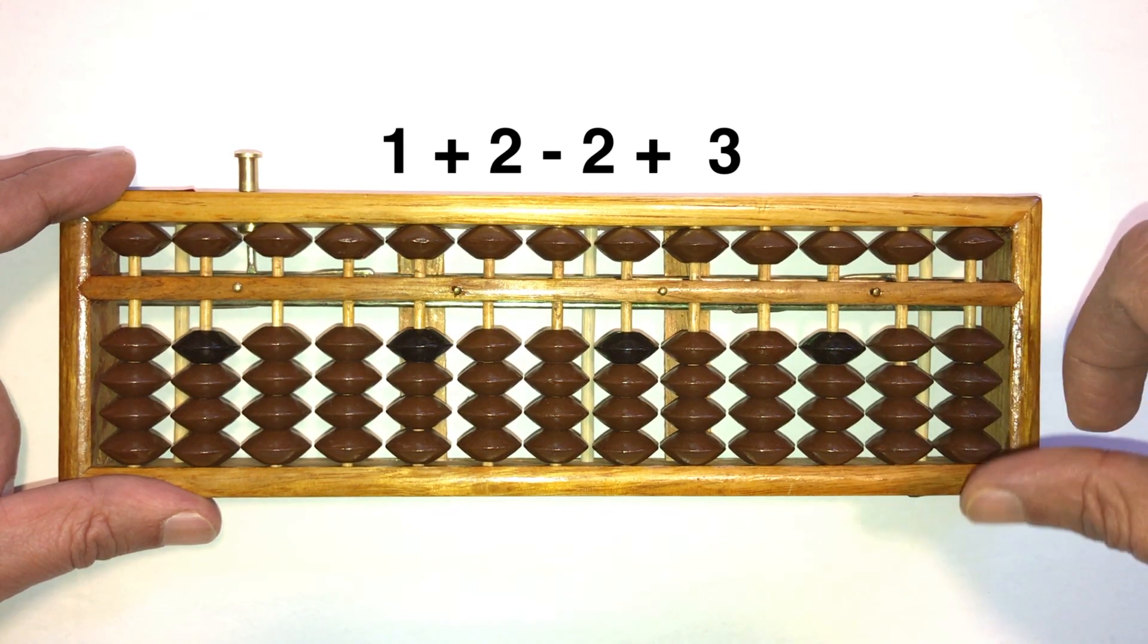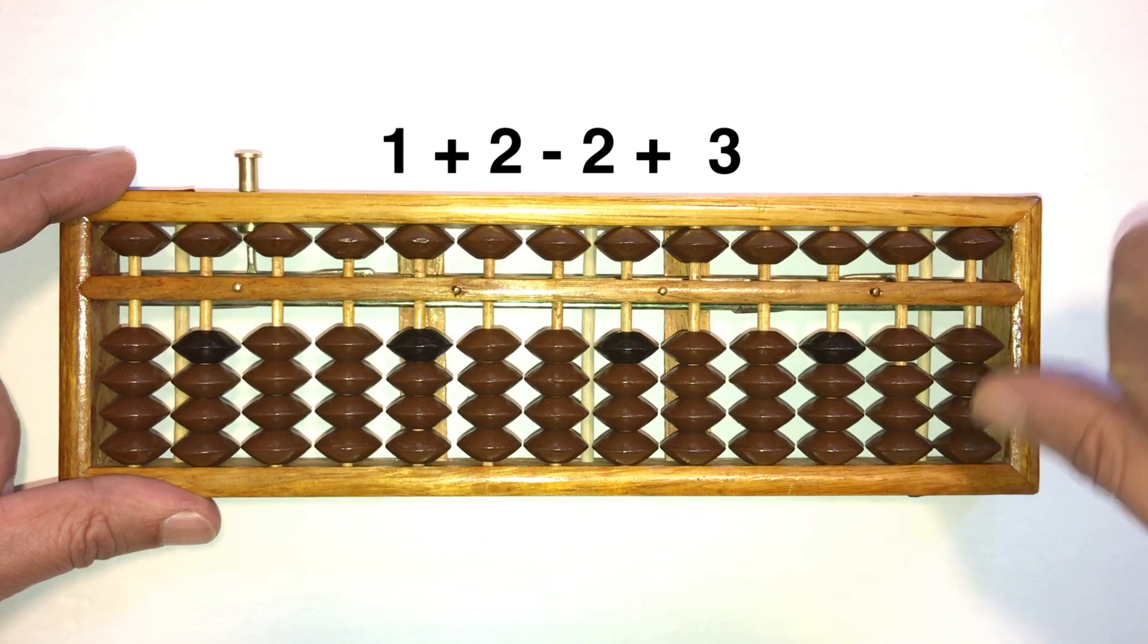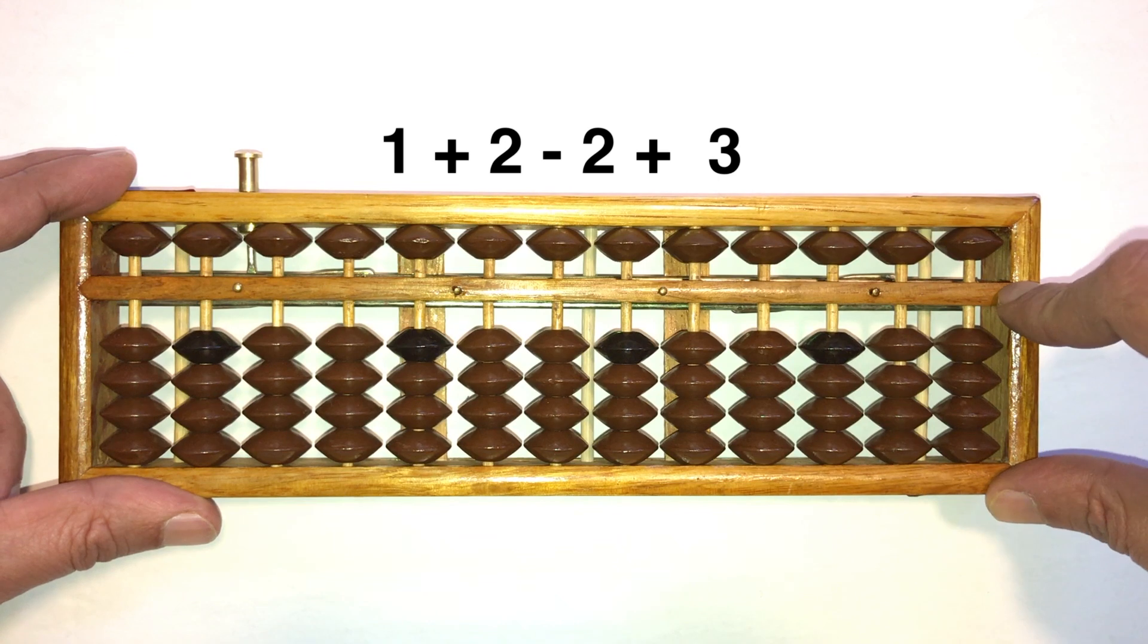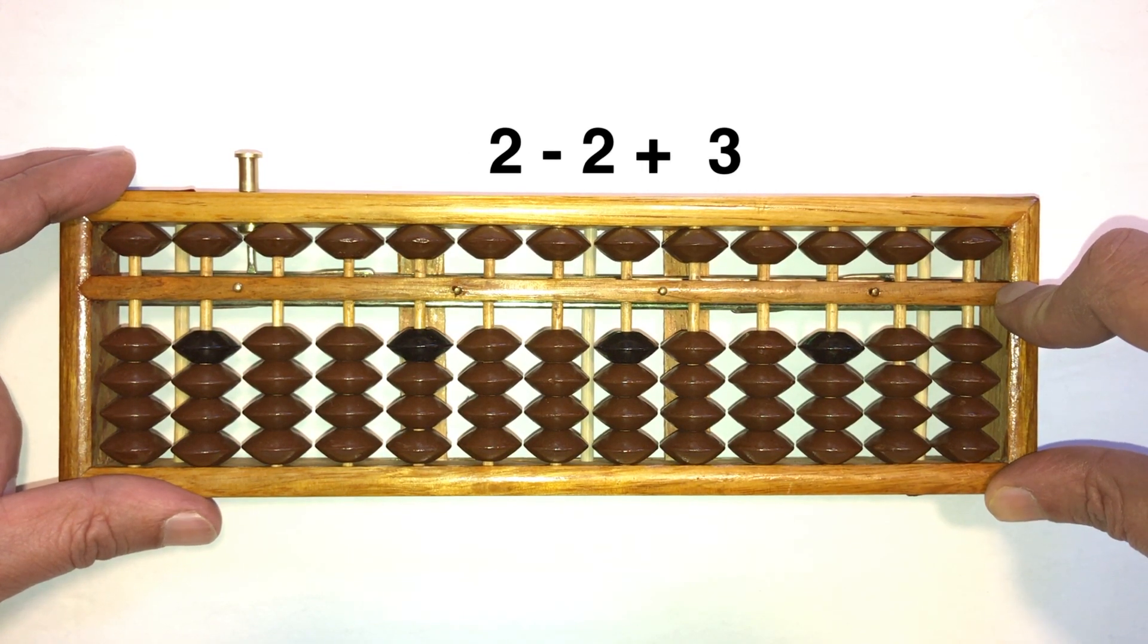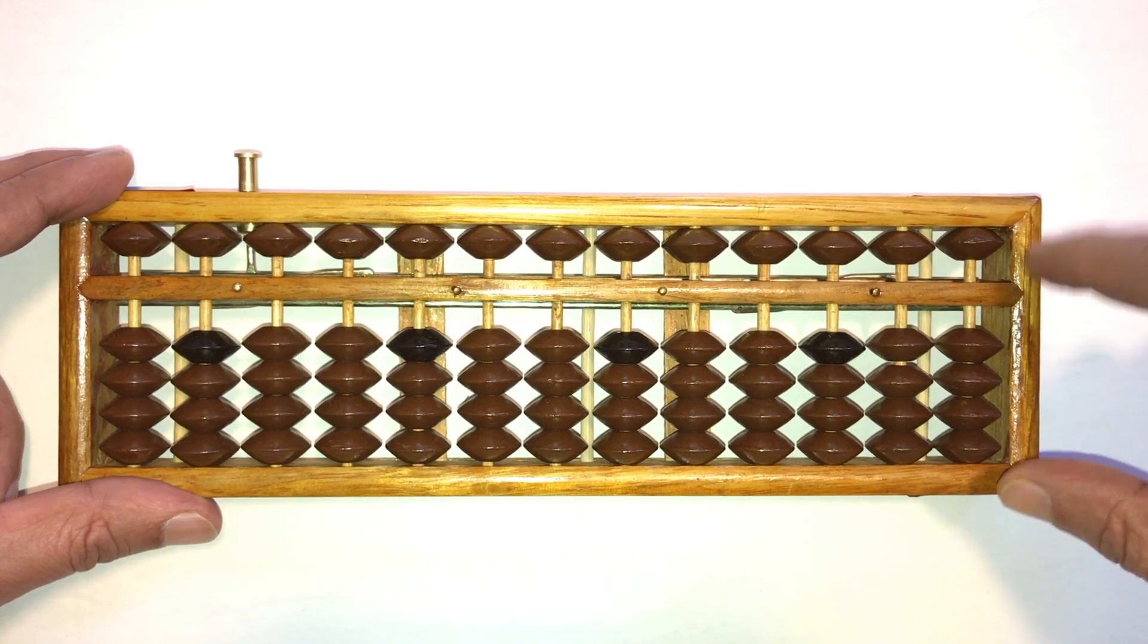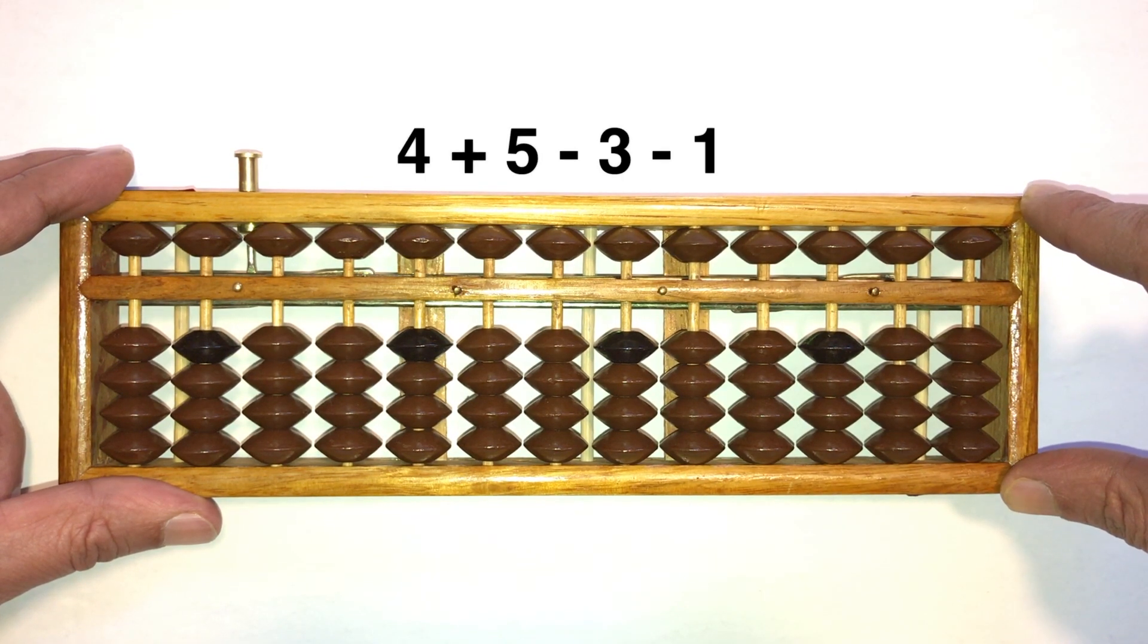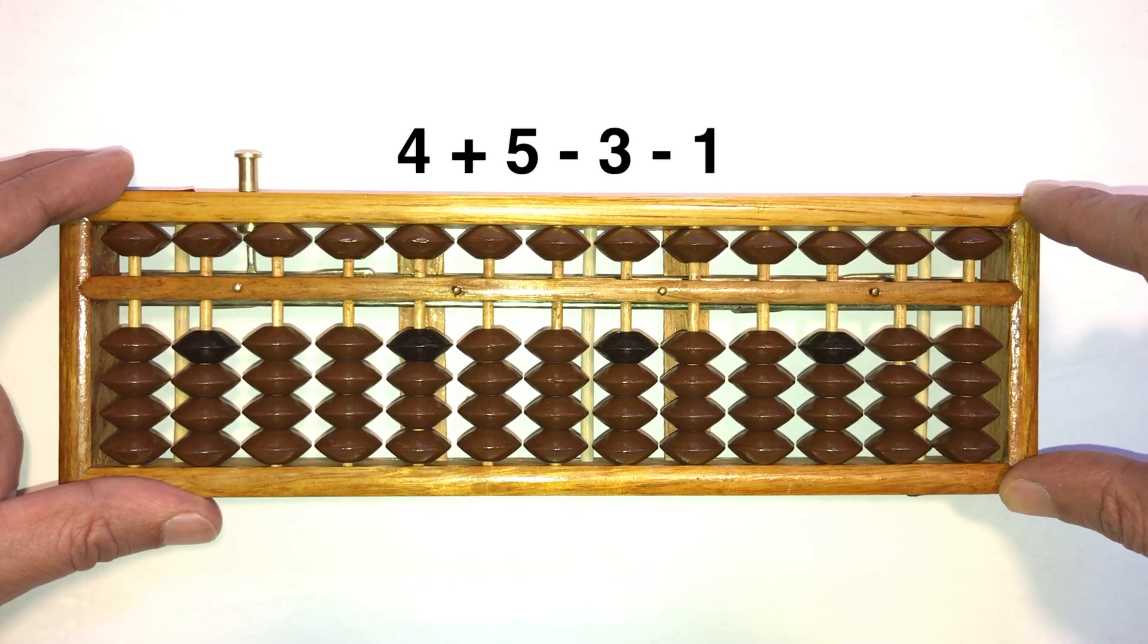So far we did lower beads only. Now let's bring in the upper beads. Let's do 4 plus 5 minus 3 minus 1.